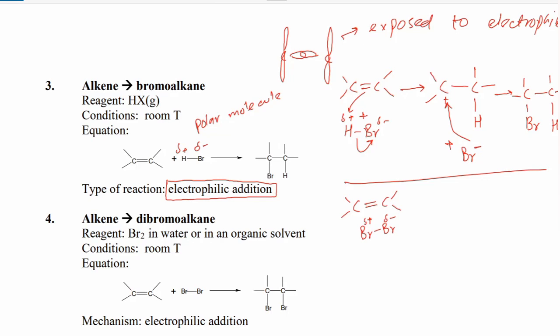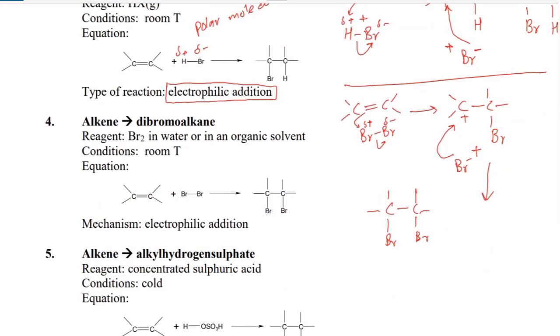Here Br⁺ attacks the alkene, and then the second bromine which has negative charge attacks the resulting carbocation. In this way both bromine atoms are added to the alkene — this is also called electrophilic addition because it also starts with the attack of the electrophile.